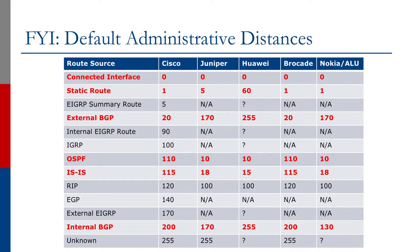Apart from directly connected interfaces, static routes have lower admin distances than all routing protocols for all devices but Huawei. If you want this default behavior to change, please remember to set the admin distance in your BGP settings, as the routing protocol with the lower admin distance is always preferred.